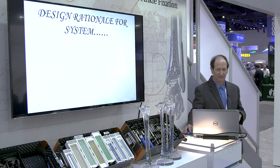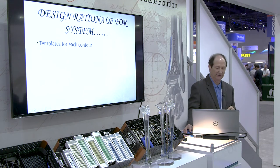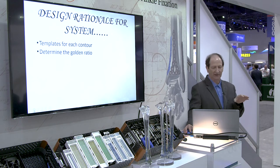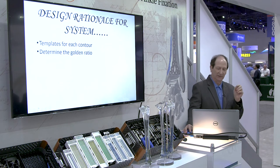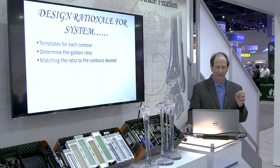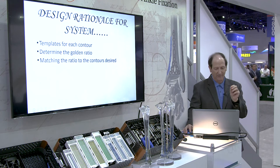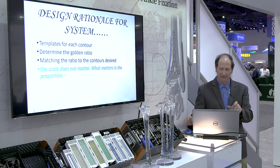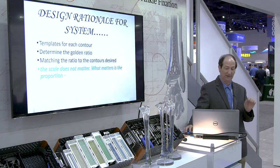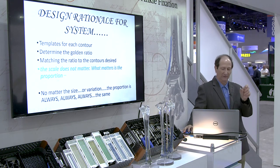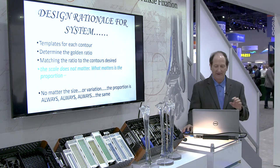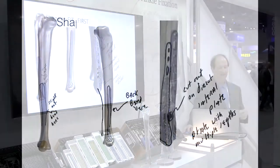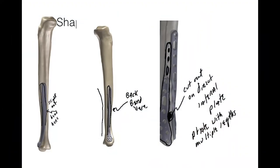To take this from concept to reality, you create idealized templates accounting for those curves and the six-axis correction — length is determined later. You make a template for each contour, determine the golden ratio, then match the ratio of contours desired for each template. What that tells you is the scale doesn't matter — the bone can be large or small, but the proportion never changes. The proportion is constant by law, and no matter the size of the patient, the proportion is always the same.